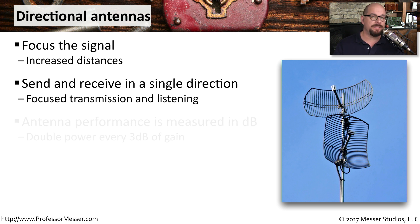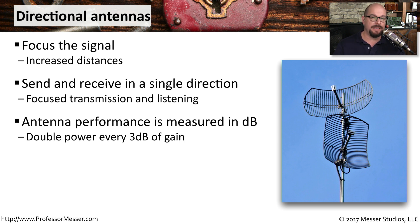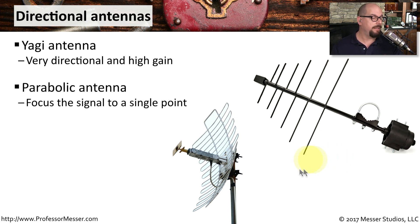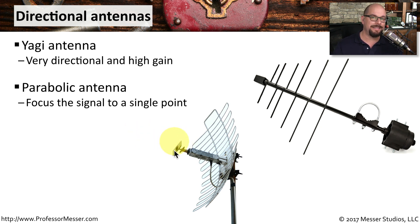We measure the performance of these antennas by looking at the dB gain — the decibel gain across these particular links. Decibels use a logarithmic scale, so every time you double the antenna power, the decibel gain increases by 3 dB. One type of directional antenna is the Yagi antenna, which is very directional and provides very high gain. Another good directional antenna is the parabolic antenna, which has a curved front. Signals come in and are focused, bouncing to a feed horn at the front of the antenna, concentrating all received signals to that single point.